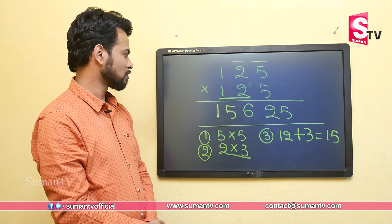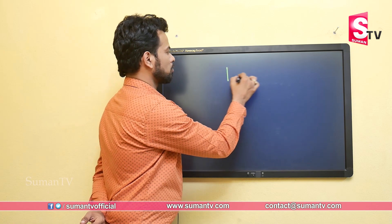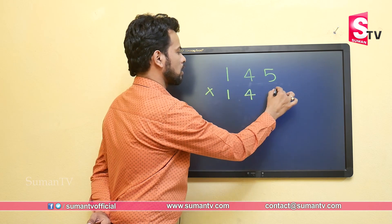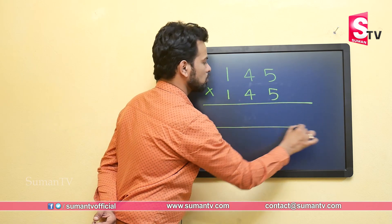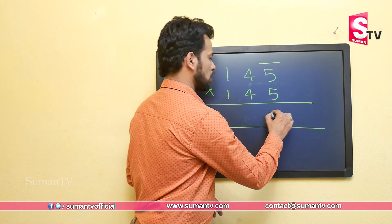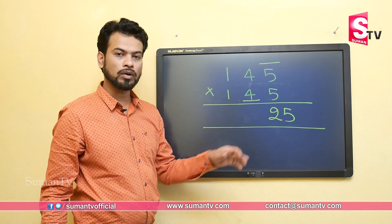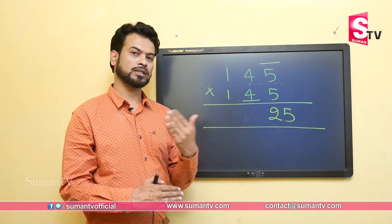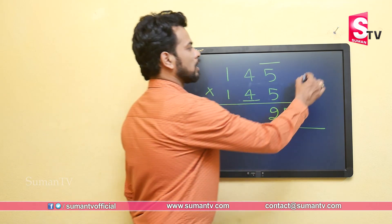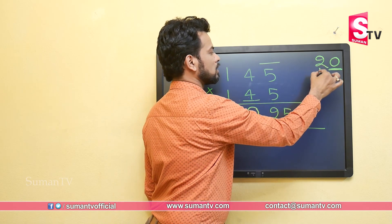Let's do one more example: 145 multiplied by 145. Step one: unit times unit — 5 into 5 is 25. Step two: the tens digit is 4 and its successor is 5, so 4 multiplied by 5 gives 20 — a double-digit answer. We place only the 0 here and take 2 as a carryover.